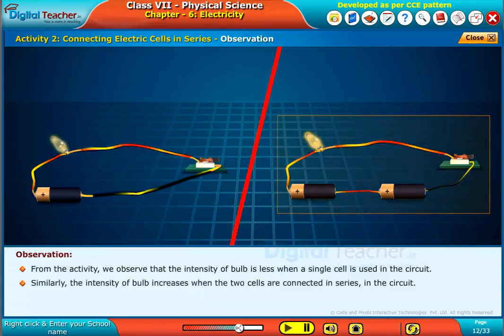Similarly, the intensity of the bulb increases when the two cells are connected in series in the circuit.